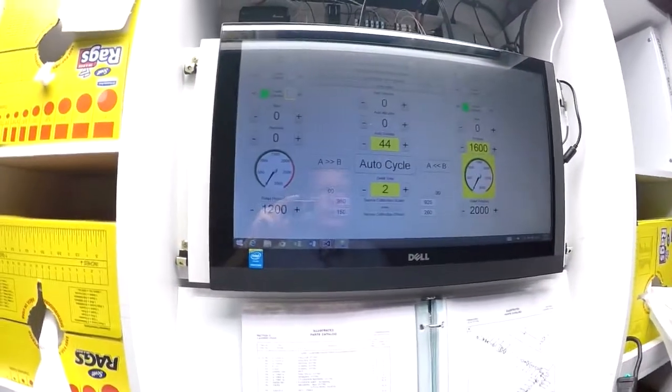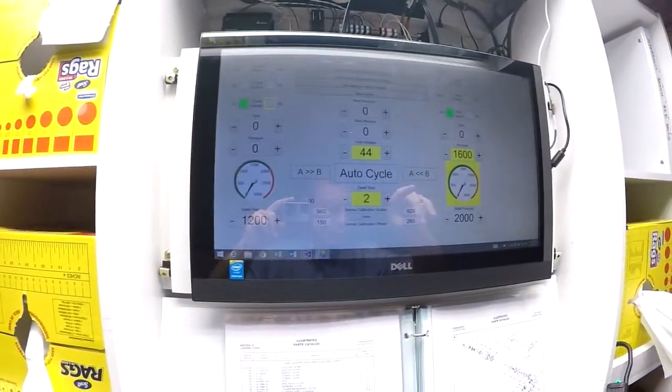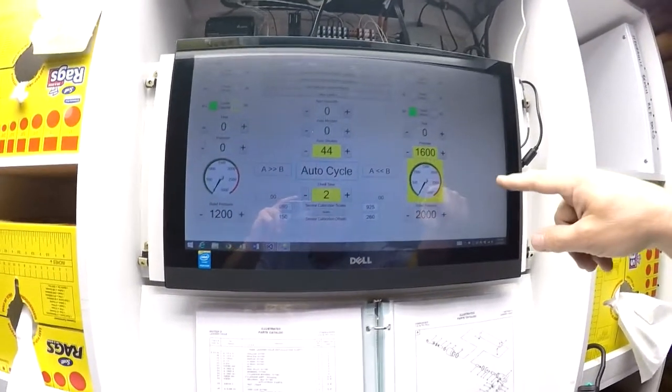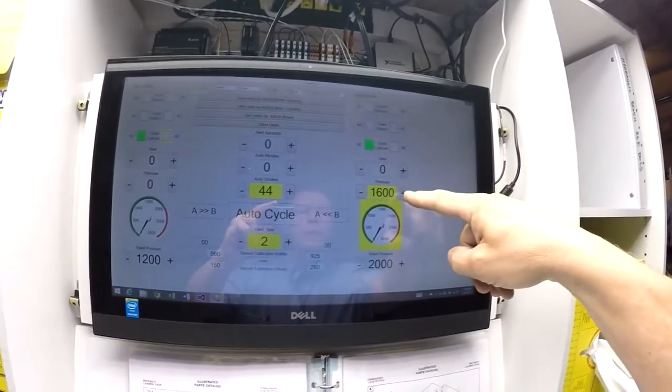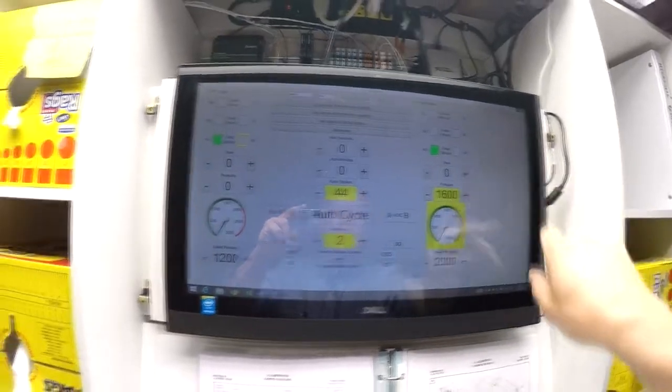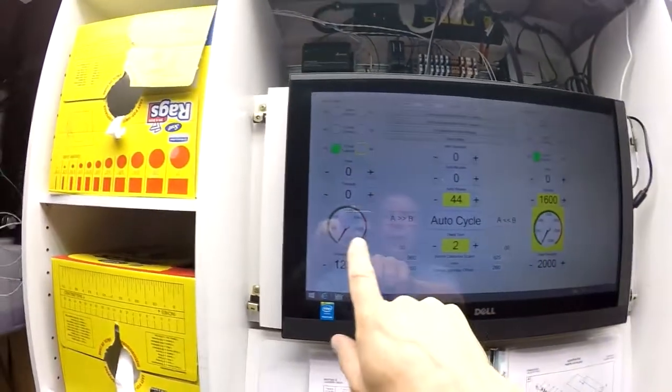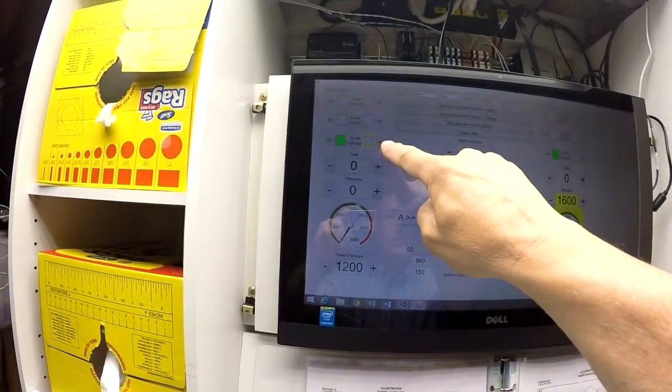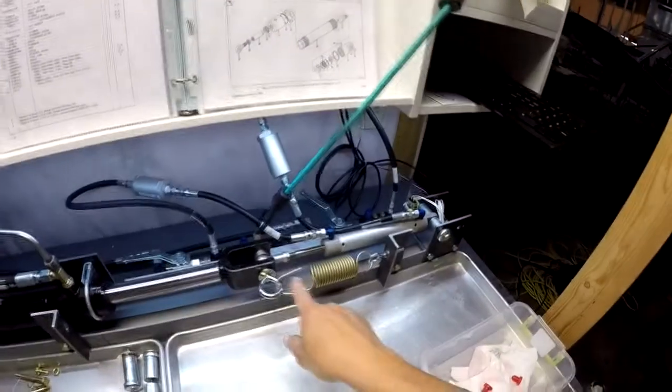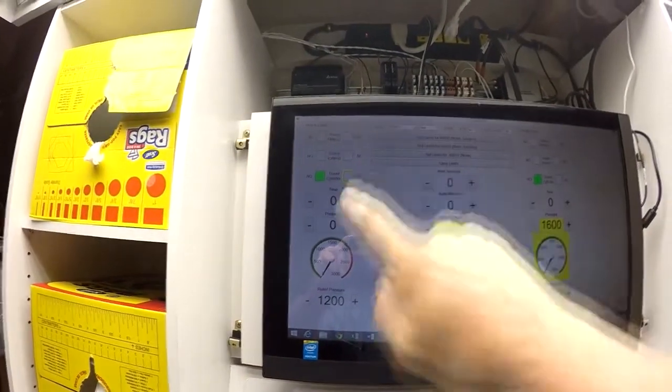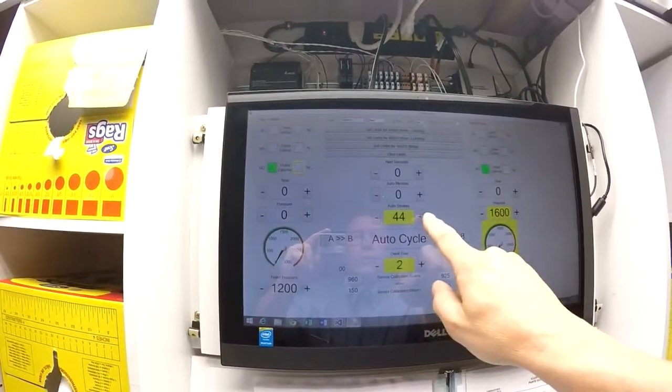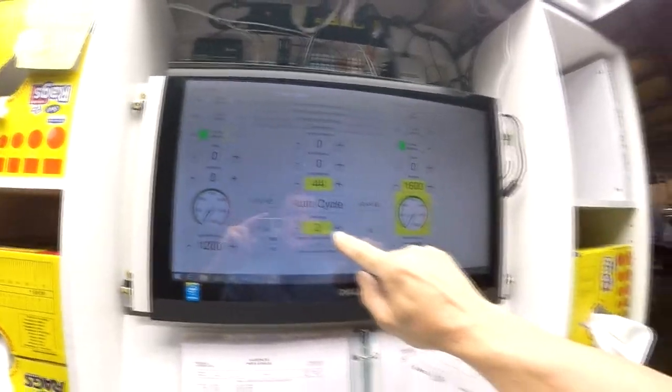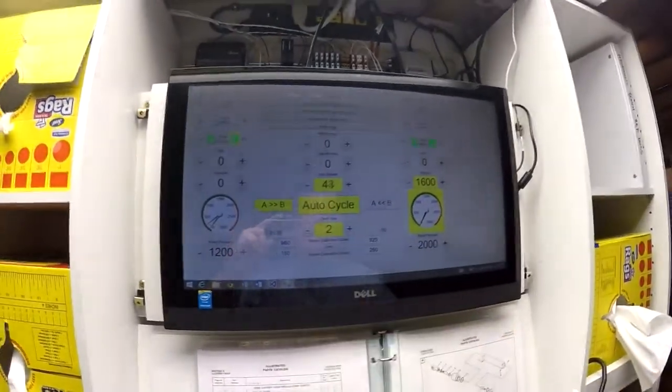So we've got this set up now to run the extension cycle to 1600 pounds and to run the retraction cycle until the limit switch is reached. That would be the retraction of the actuator in this case until the limit switch is reached. We're going to run 44 cycles. We're going to dwell two seconds between, and here we go.